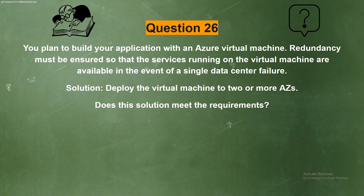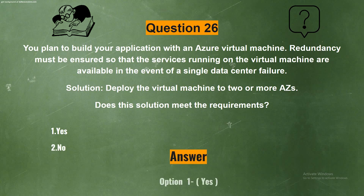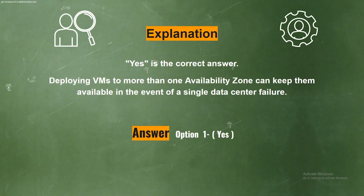Question 26. You plan to build your application within an Azure Virtual Machine. Redundancy must be ensured so that the services running on the virtual machine are available in the event of a single data center failure. Solution: deploy the virtual machine to two or more Availability Zones. Does this solution meet the requirements? The correct answer is Option 1, Yes. Deploying VMs to more than one availability zone can keep them available in the event of a single data center failure.